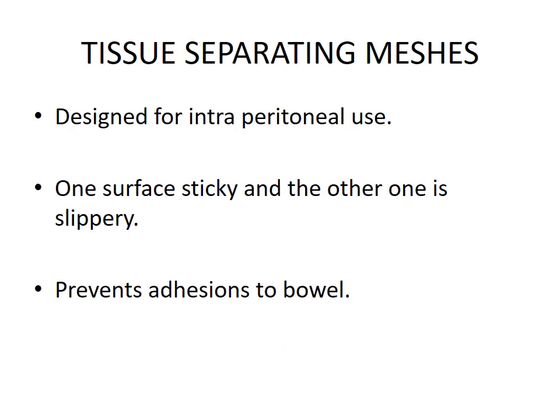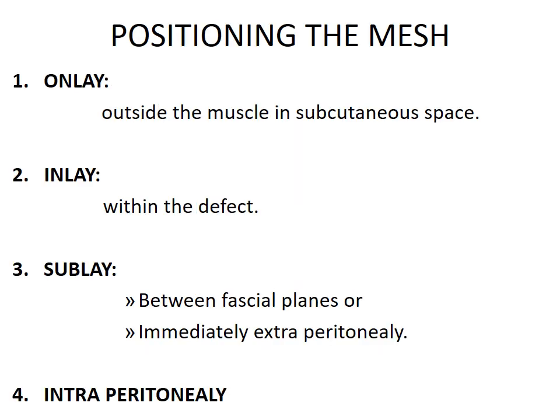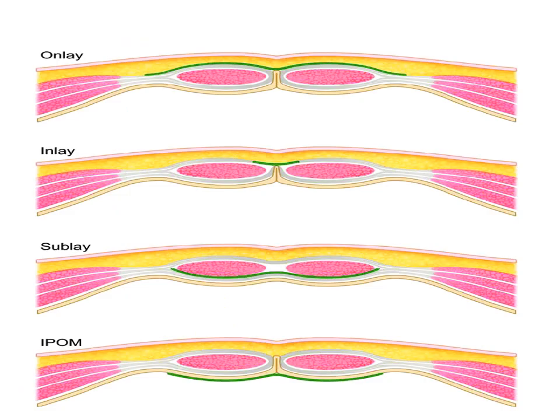Tissue-separating meshes are designed for intraperitoneal use, with one surface sticky and the other slippery, to prevent adhesions to bowel. Positioning of the mesh: (1) onlay — outside the muscle in the subcutaneous space; (2) inlay — within the defect; (3) sublay — between fascial planes or immediately extraperitoneally; (4) intraperitoneally. This figure shows the various positions of mesh — onlay, inlay, sublay, and intraperitoneal.